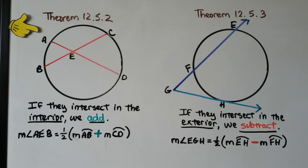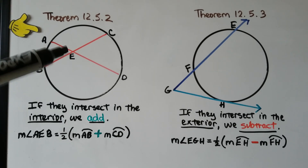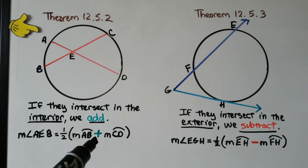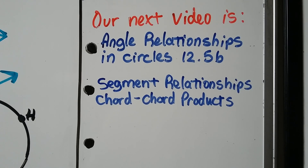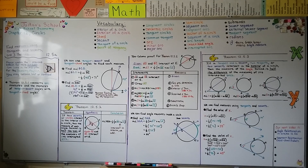Quick recap: theorem 12.5.2 says if the lines intersect in the interior, we add. If they intersect in the exterior, we subtract to find the angle measures. The second part of this lesson covers more angle relationships in circles — that's 12.5b — and then we move on to 12.6, segment relationships with chord-chord products. Now you should know when to add or subtract based on whether intersection is interior or exterior.